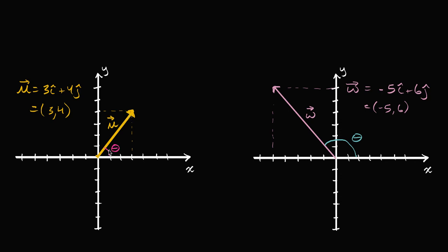To figure out theta there are a couple of ways. We can construct a right triangle: the x-coordinate is three, so one side has length three, and the y-coordinate is four, so the other side has length four. From SOHCAHTOA, we need the trig function that involves the opposite and adjacent sides of an angle — that's tangent. So the tangent of theta equals the opposite side, four, over the adjacent side, three.